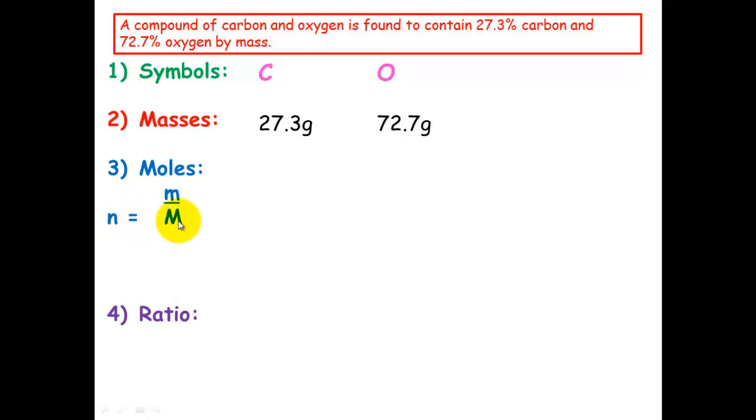N equals mass over molar mass. So for carbon, 27.3 divided by its molar mass, which is 12, which equals 2.27. Oxygen, it'll be 72.7, its mass, divided by its molar mass, which is 16, which equals 4.54. Working out the ratio again, we just divide by the smallest number that's there, which is 2.27.